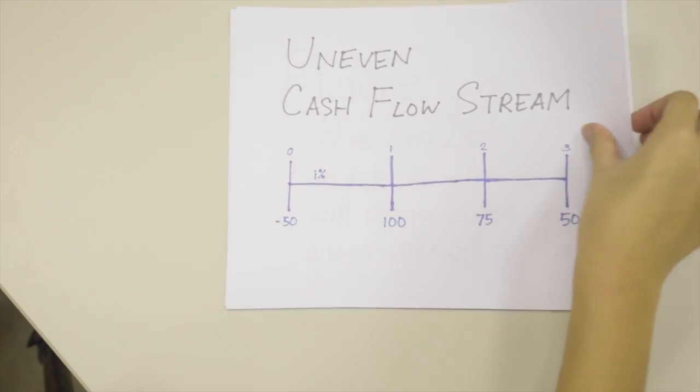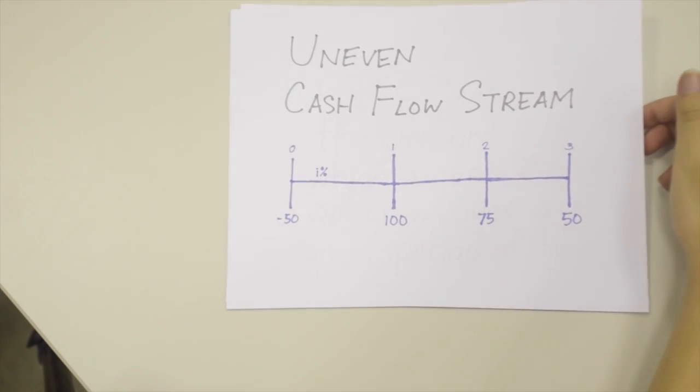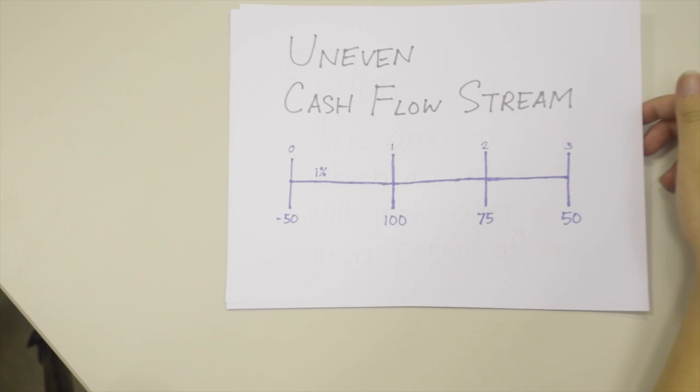In the first period, we have 100 as the payment. Second period, 75. And for the third period, we have 50.